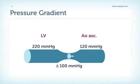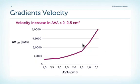In heart catheterization or with Doppler, we can actually measure the pressure gradient or pressure difference between the left ventricle and the ascending aorta. Note the high pressure the left ventricle has to achieve to get a normal blood pressure in the ascending aorta if you have severe aortic stenosis. There is a rapid increase in aortic velocity once the aortic valve area gets below 2 to 2.5 square centimeters, with an exponential increase as the valve gets smaller.